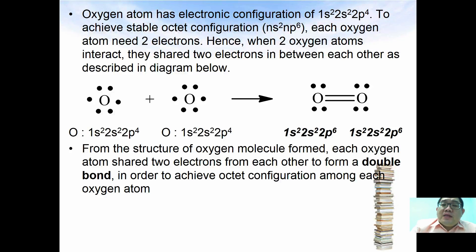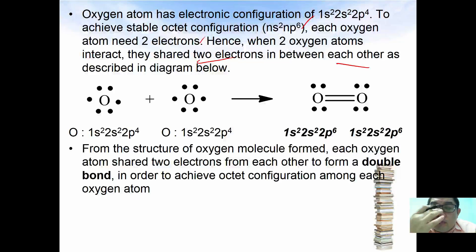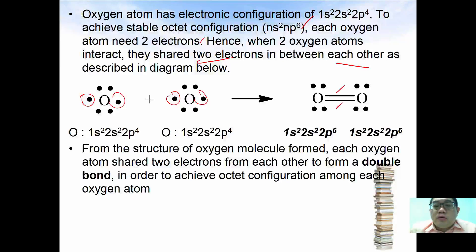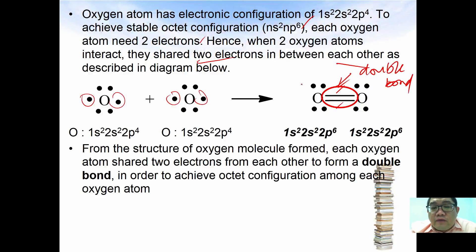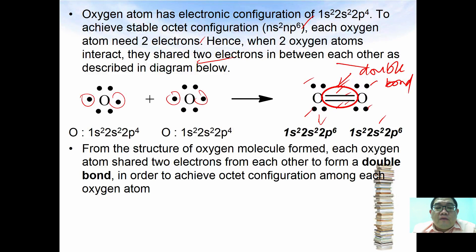Oxygen has the electronic configuration of 1s² 2s² 2p⁴. To achieve a stable configuration of ns² np⁶, each oxygen atom needs two more electrons. When two oxygen atoms interact, they share not one but two electrons between each other. Using two electrons from each oxygen atom, they share two electrons, forming what is called a double bond. With the double bond formed, each oxygen achieves 2s² 2p⁶ — a full octet.